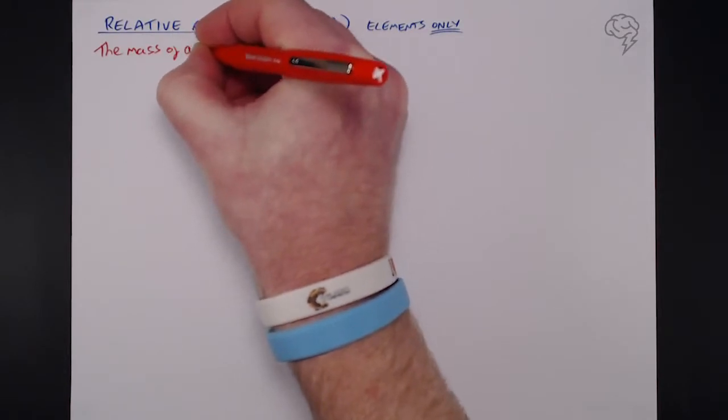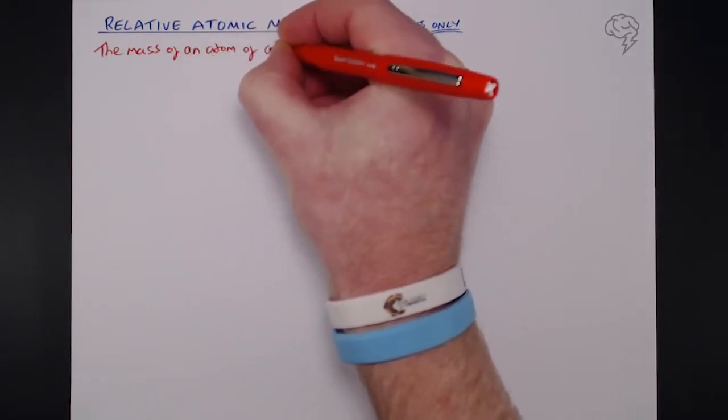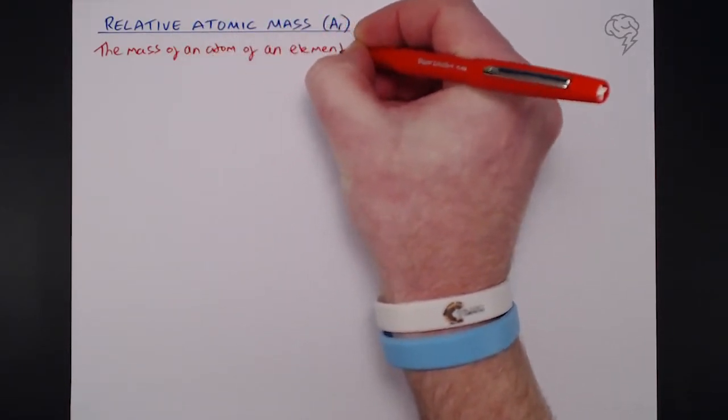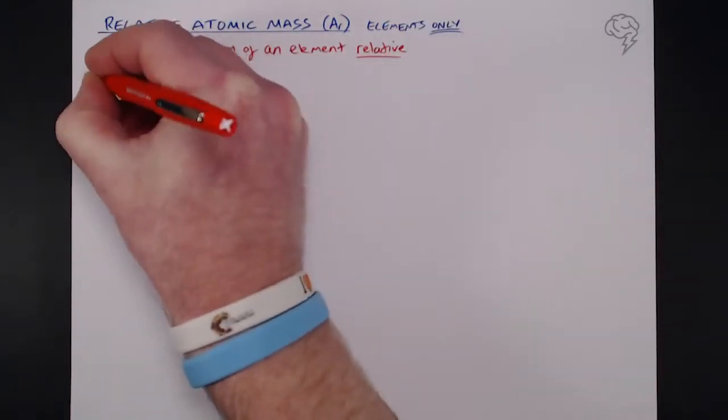Let's start with that definition, which is the mass of an atom of an element relative to one-twelfth the mass of an atom of carbon-12.